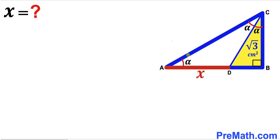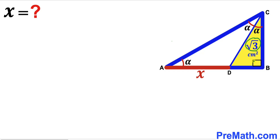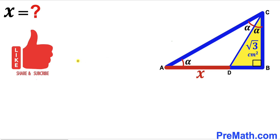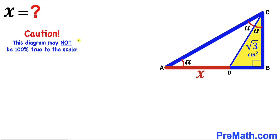Welcome to pre-math. In this video we have a big right triangle ABC along with angle bisector CD. As a result we end up with this yellow shaded right triangle DBC. The area of this yellow shaded triangle has been given to us as square root of 3 centimeter square. Angle CAD is alpha, angle ACD is alpha, and angle DCB is alpha as well. Segment AD is represented by x, and our task is to find the value of x — that is, the segment length AD.